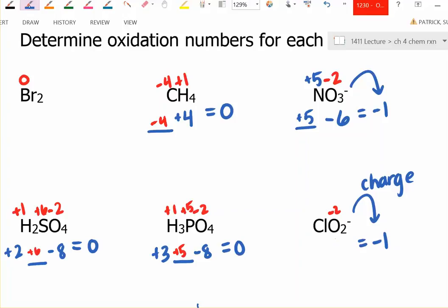Oxygen is minus two times two is minus four. So what must chlorine be in this case? I want them to add up to minus one, so it must be a plus three.